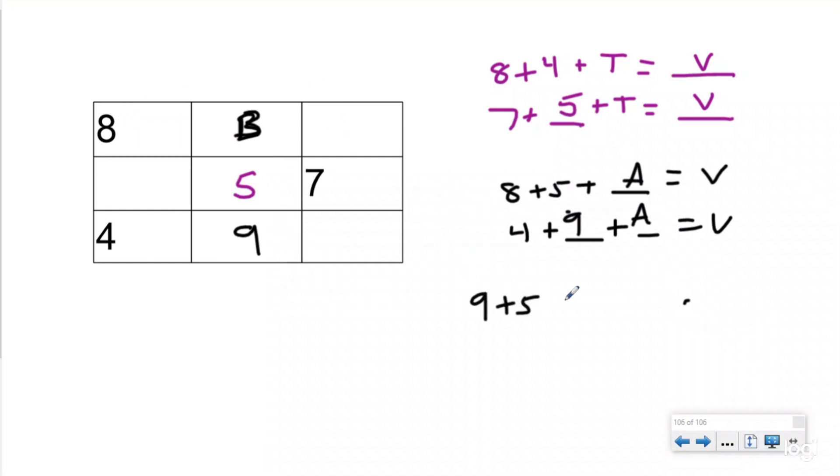So if I do nine plus five plus b, that's going to have to equal v. And then if I have eight plus some other number plus b, that also is going to equal v. So whatever eight plus this number is has to equal 14, because that's what nine plus five is. So eight plus six equals 14, which makes this box six. Now by following that strategy, I now have my diagonal lined up.